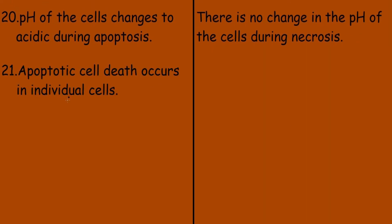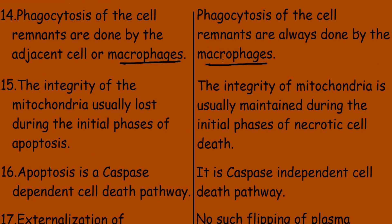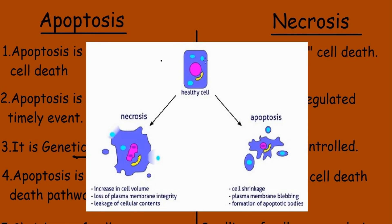Apoptotic cell death occurs in individual cells, while during necrosis, usually a group of cells undergoes cell death. To summarize with a diagram: a healthy cell undergoing necrosis shows an increase in cell volume, loss of plasma membrane integrity, and leakage of cellular contents. A cell undergoing apoptosis shows cell shrinkage, plasma membrane blebbing, and formation of apoptotic bodies.